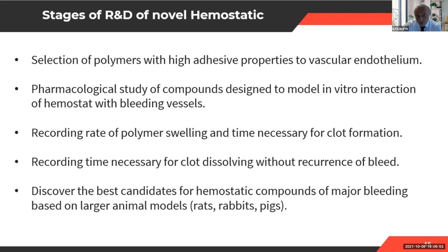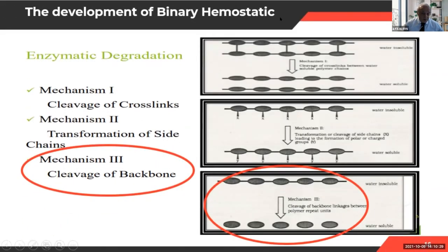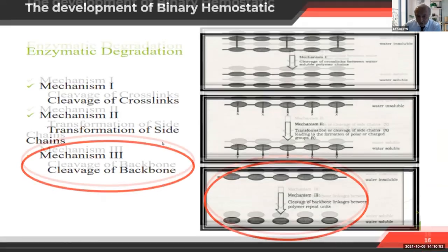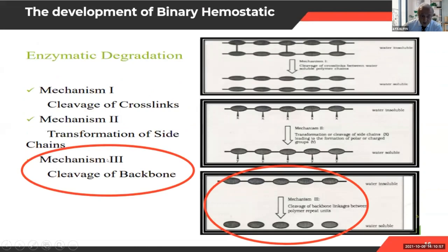Pharmacologically, we studied different compounds and designed in vitro interactions with hemostats and bleeding vessels, recording the rate of polymer swelling and the time necessary for clot formation. We also recorded the time necessary for clot dissolving without recurrence of bleeding, and discovered the best candidate for the hemostatic composition. Studies were conducted on rats, rabbits, and pigs. We looked at existing enzymatic degradation mechanisms: cleavage of cross-links, transformation of side chains, and cleavage of backbones — our product falls into the third mechanism.